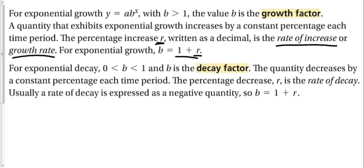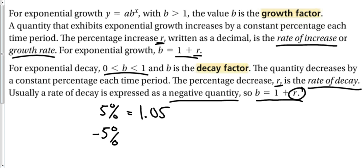For decay, this works exactly the opposite way. For decay, we're going to know that b is going to be in between zero and one. B is the decay factor. The quantity decreases by a constant percentage. So the percentage decrease r, that's our rate of decay. And the rate of decay is usually expressed as a negative quantity. So b is still equal to one plus r, but in this case, r would be negative. If I'm telling you that my growth rate is 5%, that's going to equal 1 plus 0.05, which equals 1.05. On the opposite hand, if I tell you I have a decay rate of negative 5%, I'm going to write that as a decimal, add it to one, and I'm going to get 0.95. Notice, my growth factor is bigger than one, my decay factor is in between one and zero.